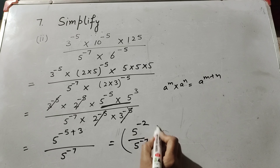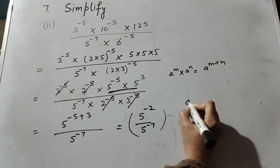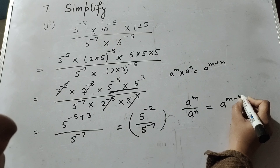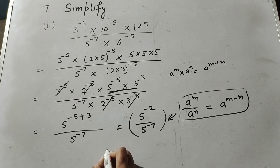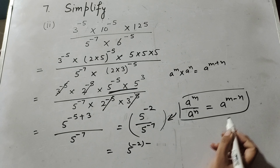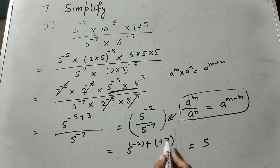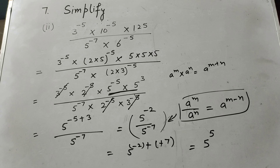Now in the term 5 raised to power minus 2 over 5 raised to power minus 7, we use the law of exponent: a raised to power m over a raised to power n equals a raised to power m minus n. So it is equal to 5 raised to power minus 2 minus minus 7. The minus minus becomes plus, so it is 5 raised to power minus 2 plus 7, which is 5 raised to power 5. So 5 raised to power 5 is the answer.